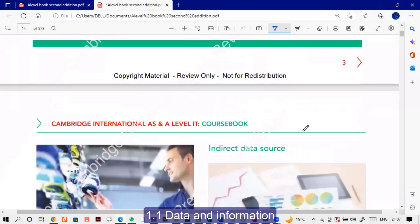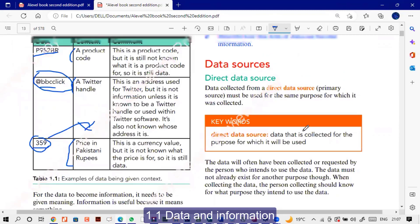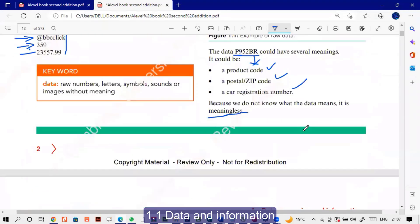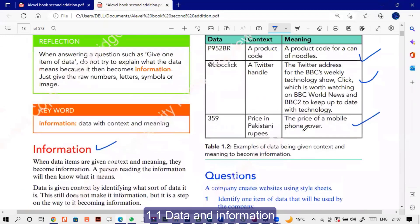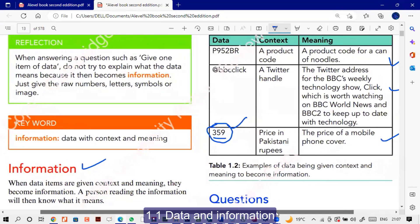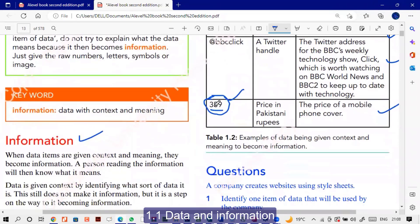They haven't discussed over here, but there's another thing which is known as knowledge. Knowledge is when you add more information to it. For example, if I say 359 is basically a price in Pakistan rupees, but if I say the price of a mobile phone cover in Pakistan is a lot more than, as compared to let's say Dubai, that is knowledge. Knowledge means that you use your information to compare and contrast. I'm just discussing with you. They haven't discussed it but I'm just telling you what is knowledge.